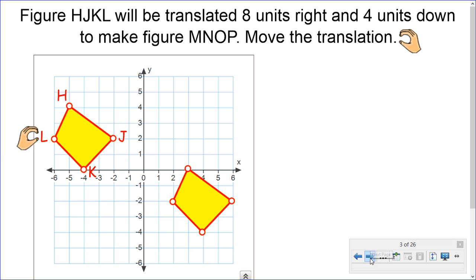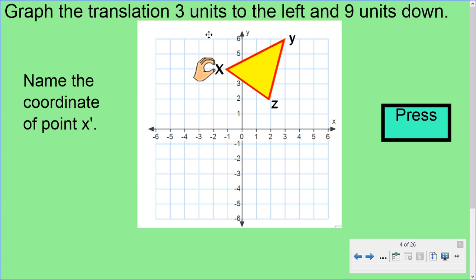Here's one for you. Graph the translation 3 units to the left and 9 units down. Name the coordinate of point X prime. Here's point X — you need to move it 3 units to the left and 9 units down, and then you'll get point X prime. We'll discuss what it is in class, so hopefully you'll find it.